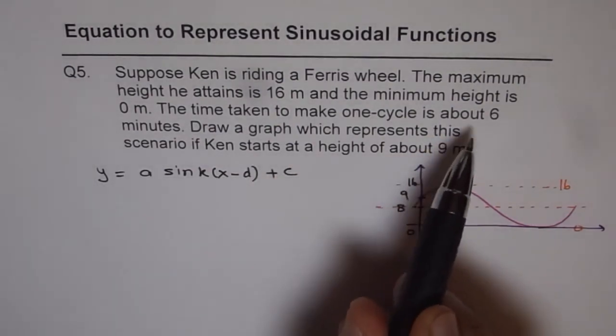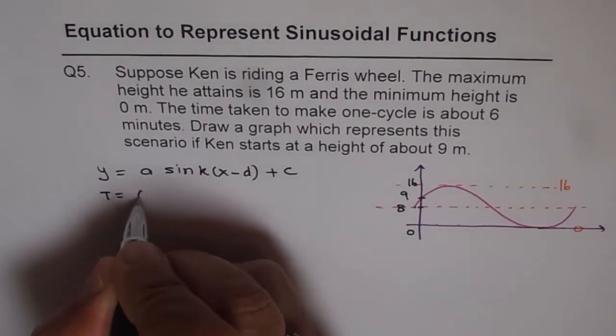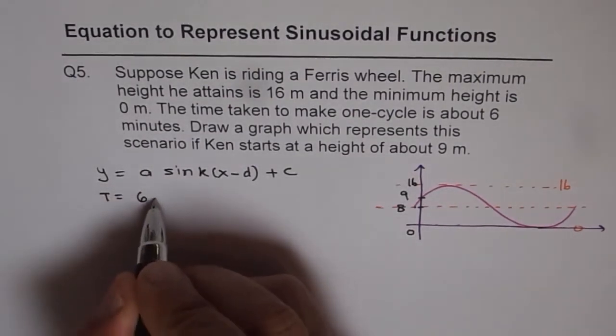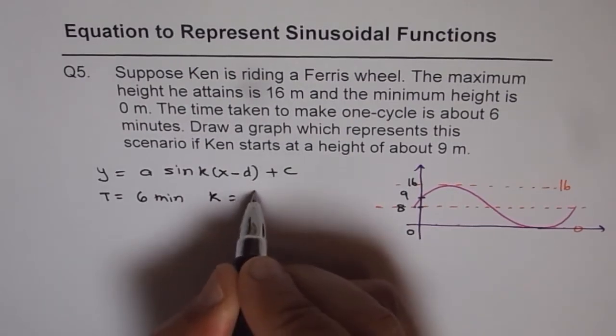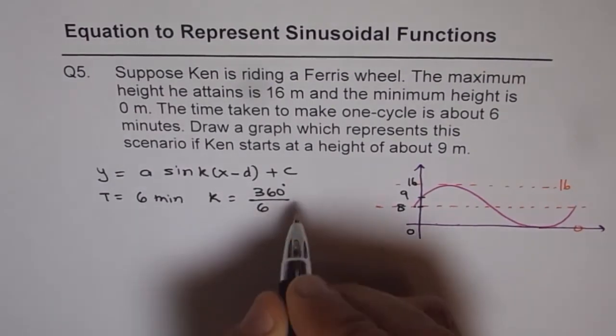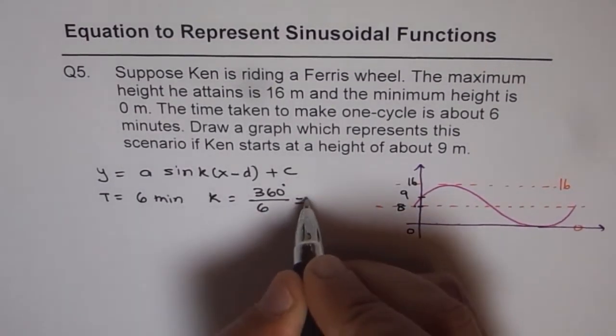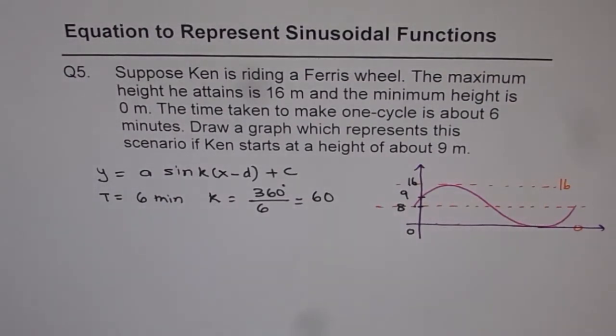We know the time period. Time period is 6 minutes. So we know t equals 6. So that means the value of k should be equals to 360 degrees divided by 6 minutes. So that gives us 60. So k is 60 for us. Now that is one thing we know now.